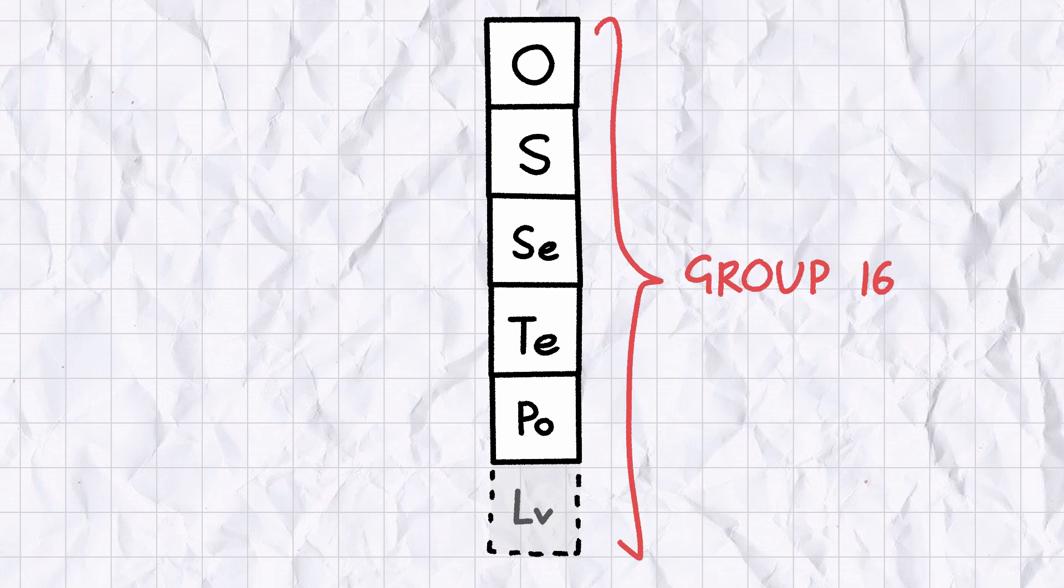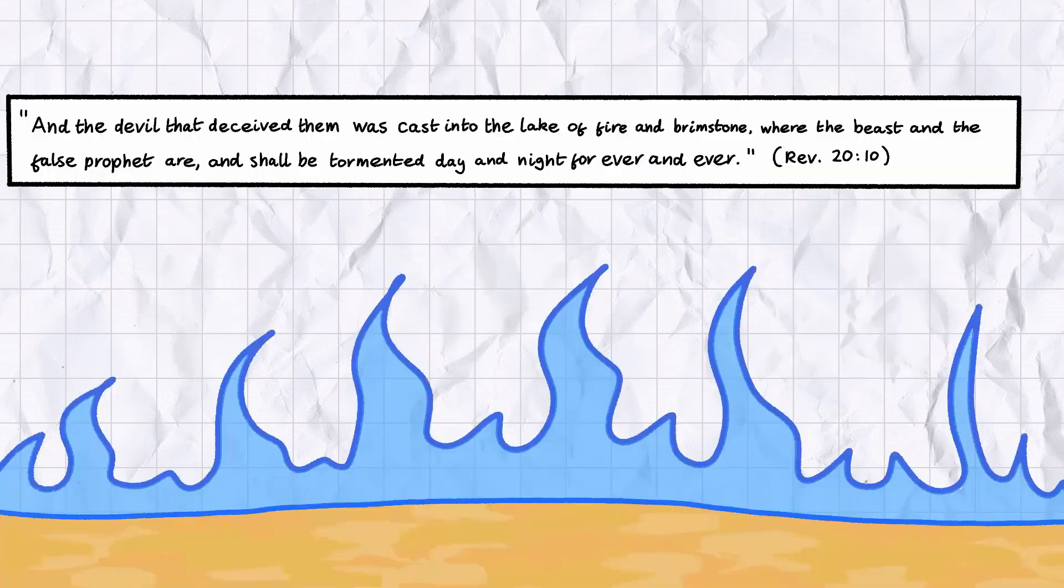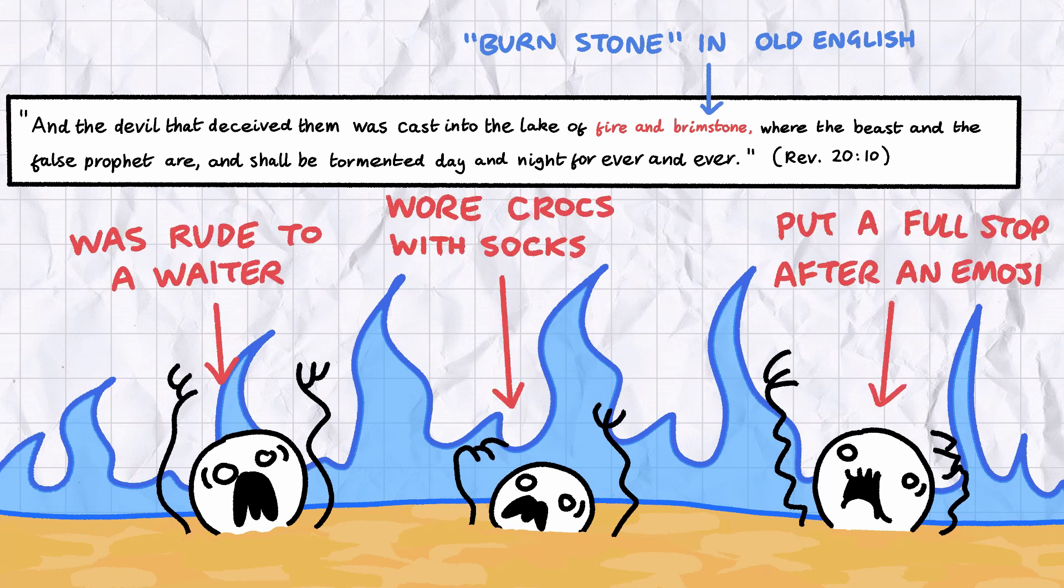Sulfur is the second of the group 16 elements, and is one of the few solid elements that can be found in its pure form in nature. Elemental Sulfur can be found near volcanoes and geothermal springs, and was associated in Biblical times with the Devil. The Book of Revelations mentions a lake of fire and brimstone, an archaic name for Sulfur, a place where the wicked shall be cast down on Judgment Day to suffer for all eternity.